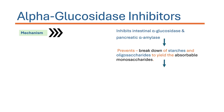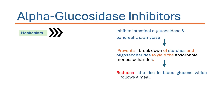More absorbable monosaccharides means more glucose in circulation if alpha glucosidase is active. By inhibiting alpha glucosidase, the release of monosaccharides is delayed and occurs at a constant rate over time. This reduces the rise of blood glucose levels in the body following a meal.